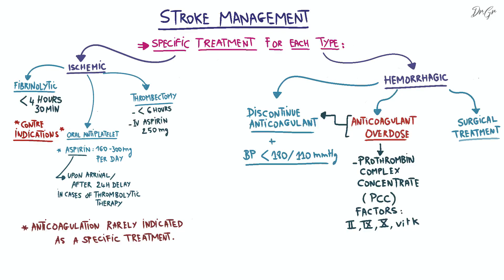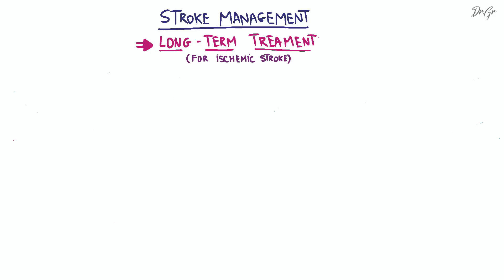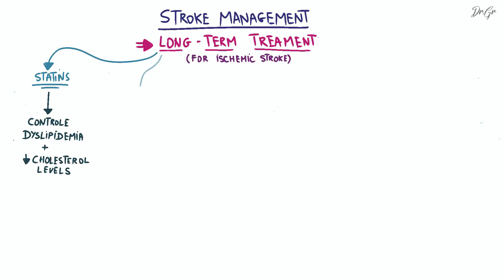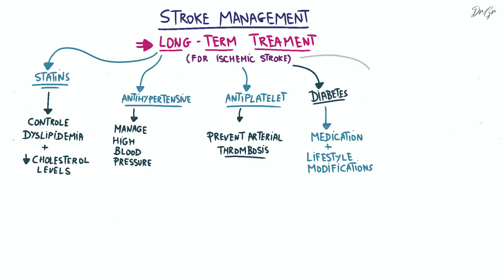This treatment approach aims to address the specific type of stroke and manage it accordingly, taking into account the patient's condition and potential contraindications. Long-term treatment for individuals who have experienced an ischemic stroke involves several measures to reduce the risk of recurrence and manage underlying risk factors. These include statins to control dyslipidemia and lower cholesterol, antihypertensive medications to manage high blood pressure, antiplatelet agents to prevent arterial thrombosis, and proper management of diabetes through medication and lifestyle modifications.